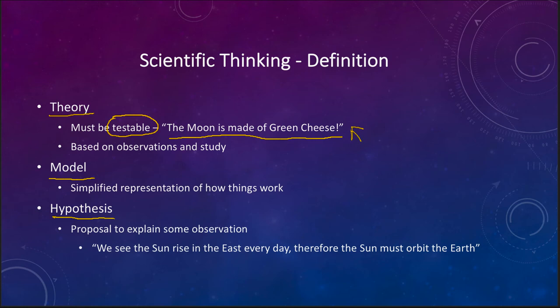Whereas a theory is something that has been tested over and over, something like the theory of relativity, something that has been significantly tested and tried over a good period of time.